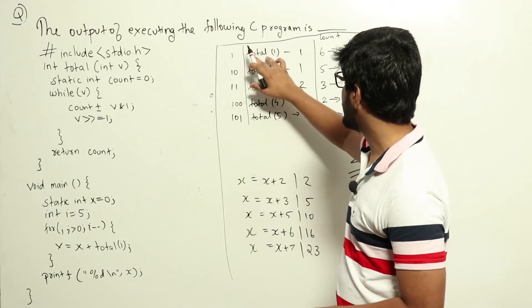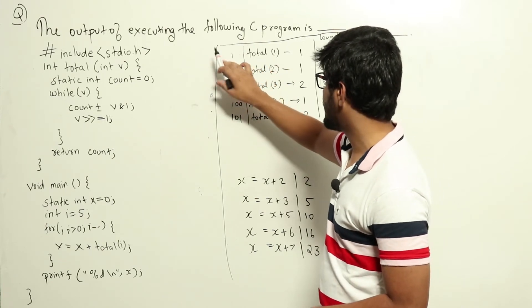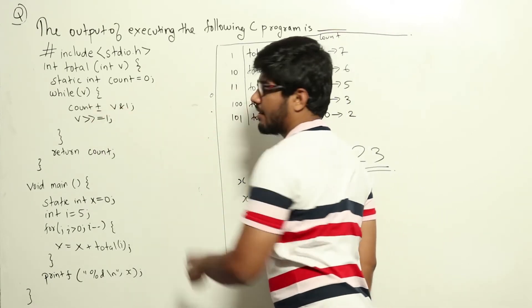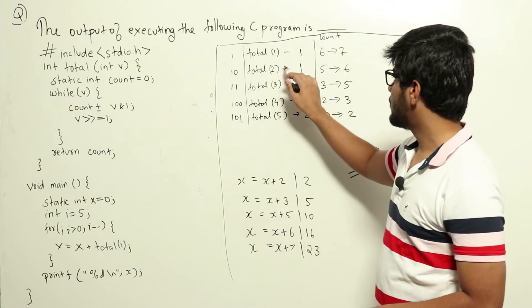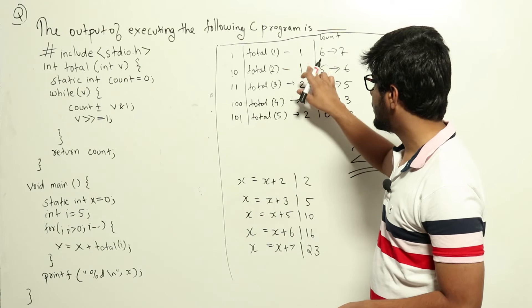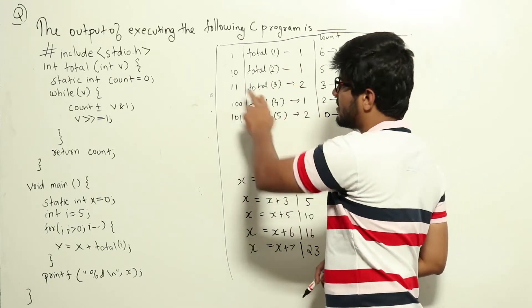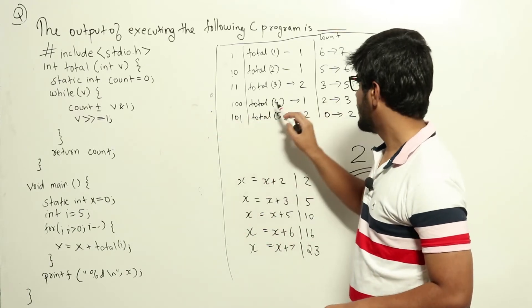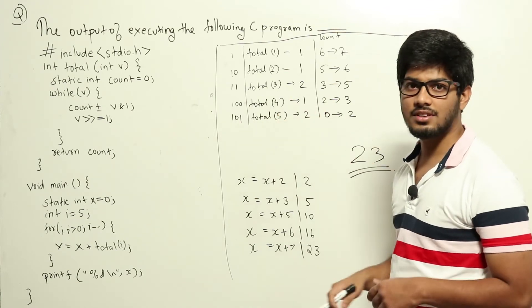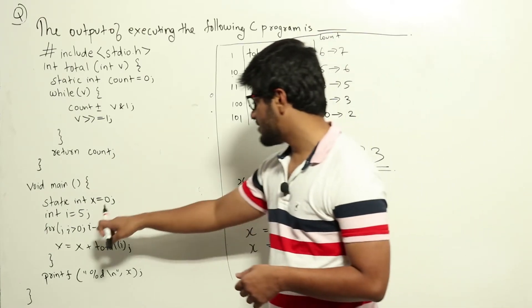Let's check each value: total(1) — 1 is just '1' in binary, one set bit, adds 1. total(2) — 2 is '10', one set bit, adds 1. total(3) — 3 is '11', two set bits, adds 2. total(4) — 4 is '100', one set bit, adds 1. total(5) — 5 is '101', two set bits, adds 2.